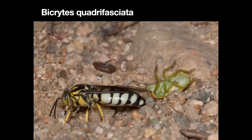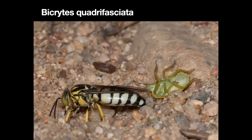Here is Bicyrtes, a wasp that captures stink bugs. She mass provisions — putting several stink bugs into a cell and laying an egg on them, often on the first one. This was photographed up by Fort Collins, but this species is also found here. We also have Bicyrtes ventralis here, which is much darker and a bit smaller. I believe all of them are stink bug hunters. Here you see one going into the ground into a cell she's made; her young will feed on the stink bugs.